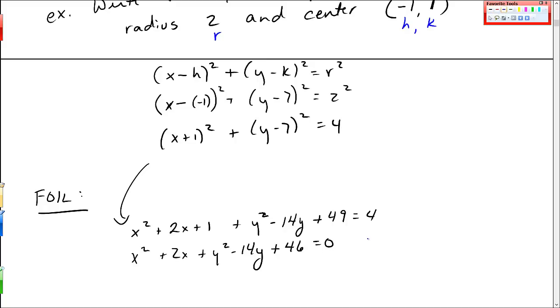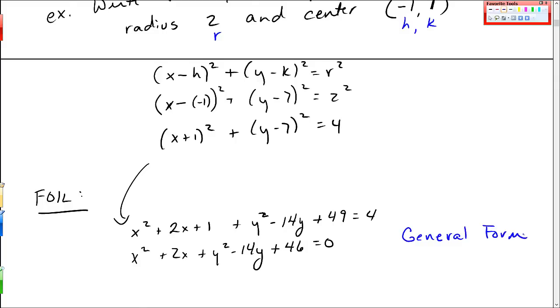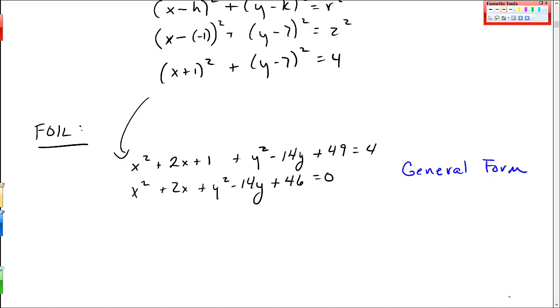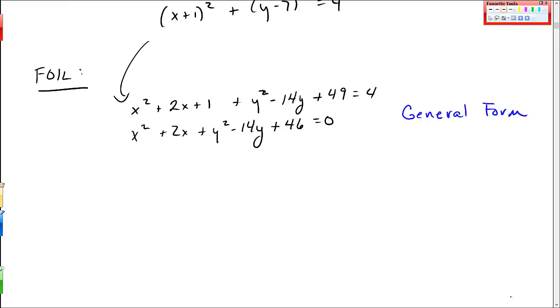This is another form that we sometimes encounter circles, it's called the general form. These names, general form, they're not very descriptive for circles. So this one is less useful or less easy to work with. Now, I want to show how to go back from the general form to the standard form, because it's much easier to work with circles in the standard form.